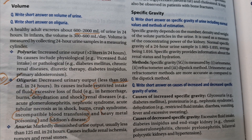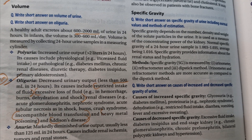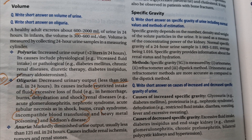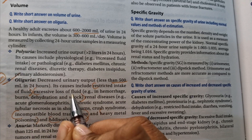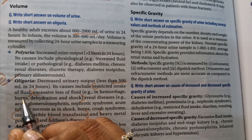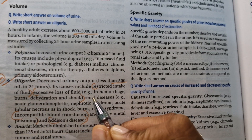Conditions when there is less fluid intake — the body tries to preserve the volume of the blood, so there will be less urine output. Excessive fluid loss in case of hemorrhage, burns, dehydration, or shock also leads to oliguria.